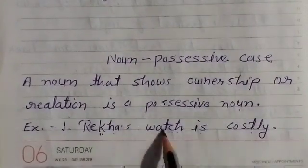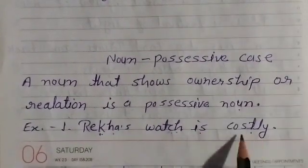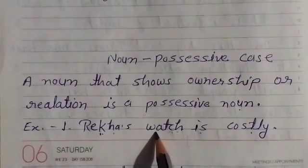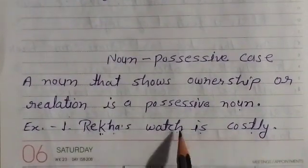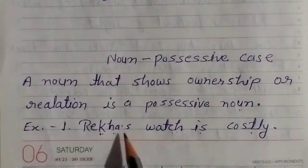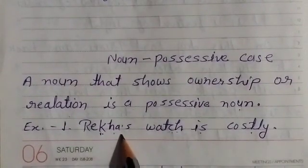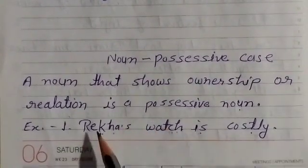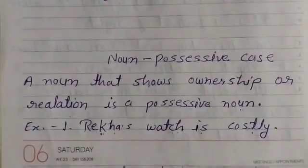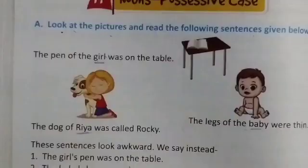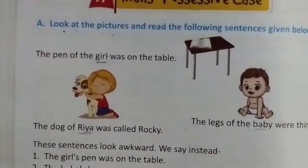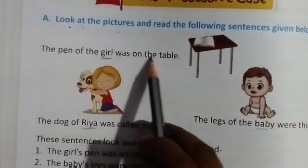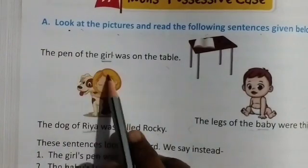Now, example dekhe — Rikha's watches are costly. So the watch belongs to Rikha, okay. Rikha hai usi ki watch hai, costly hai, isliye waha kisko belong karta hai — Rikha ko. Now look at this picture: the pen of the girl was on the table.